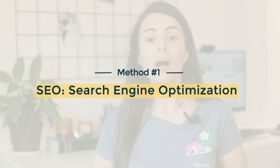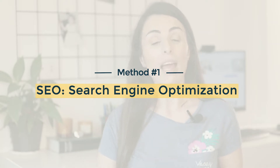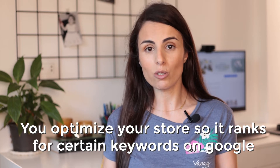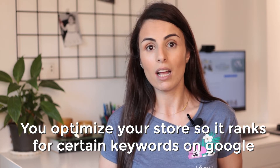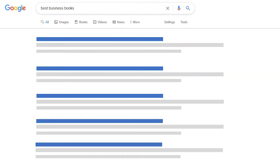The first method I want to talk about is SEO or search engine optimization. SEO is when you optimize your store so it ranks for certain keywords on Google. So you optimize your product pages, your collection pages and your homepage in order to rank for long tail keywords on Google. And when you do that, you keep getting free traffic for years to come. However, SEO is a long term procedure, which means that if you started optimizing your store for SEO today, you would need months before starting to see results. That's why if you are patient and you have time, I highly recommend you to invest on SEO.